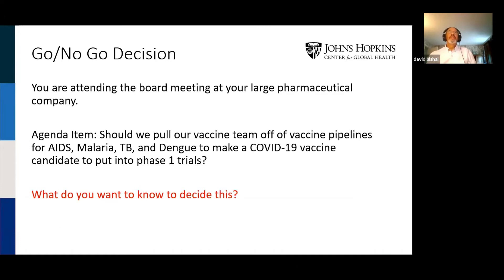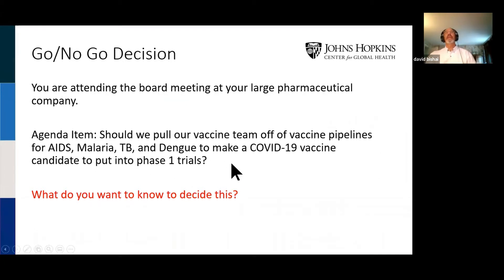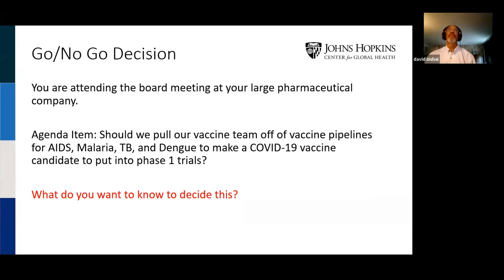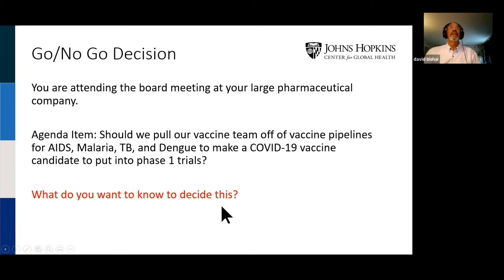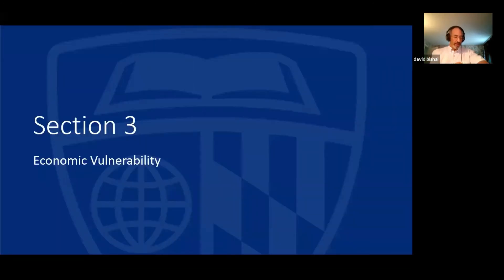These pharmaceutical companies have many important things to make for the world — they're working on AIDS, malaria, TB, and dengue vaccines. At a board meeting, the board is asking: should we take 100 scientists off of HIV and put them on COVID-19? Do we retrofit our factories and our regulatory and legal teams to produce this COVID-19 vaccine? They don't know how much money they're going to make if they get the COVID-19 vaccine. So there are lots of things that can't be determined quite yet. Let me move into my last section so we have time for questions and answers.